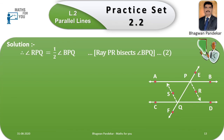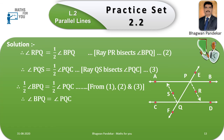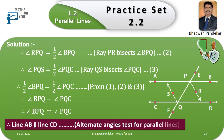Since ray PR bisects angle BPQ: angle RPQ = (1/2) × angle BPQ (equation two). Since ray QS bisects angle PQC: angle PQS = (1/2) × angle PQC (equation three). From equations one, two, and three: (1/2) × angle BPQ = (1/2) × angle PQC. Therefore, angle BPQ = angle PQC. Therefore, angle BPQ ≅ angle PQC. Therefore, line AB is parallel to line CD by the alternate angle test for parallel lines.